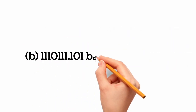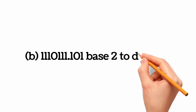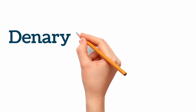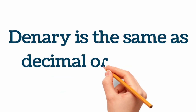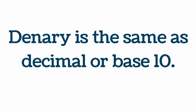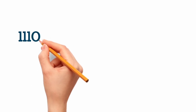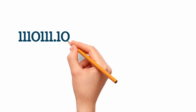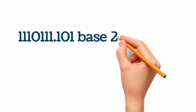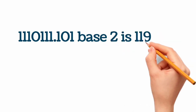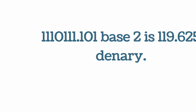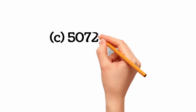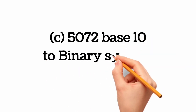Question 2b: we have 11110111101 point 101 base 2 to denarii. Do not let the word denarii confuse you — it is the same as decimal or base 10. From the conversion, 11011101101 base 2 equals 119.625 denarii or decimal. This also needs explanation and I will do videos about the conversions.